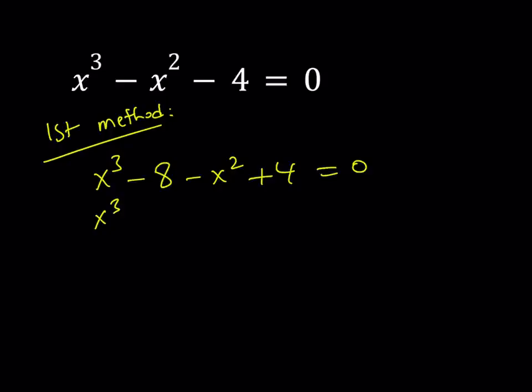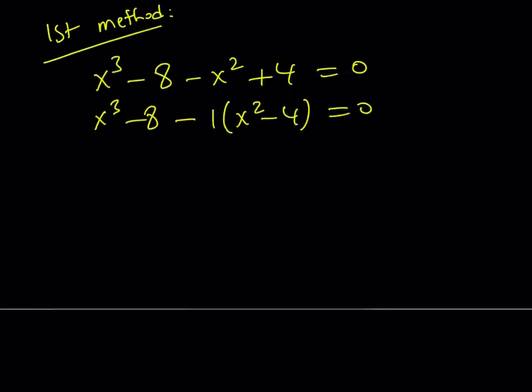Notice that I can take out a negative 1 here and write this as x² - 4 and that becomes difference of 2 squares. And x³ - 8, as you know, is a difference of 2 cubes. So let's go out and factor it.